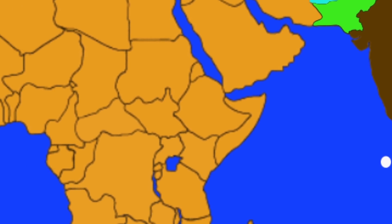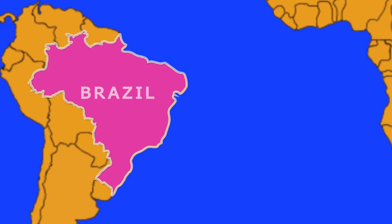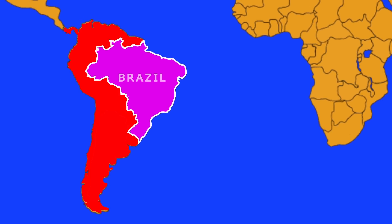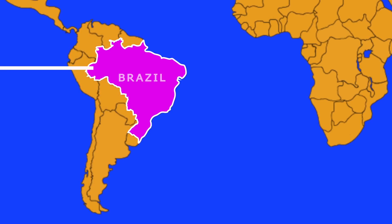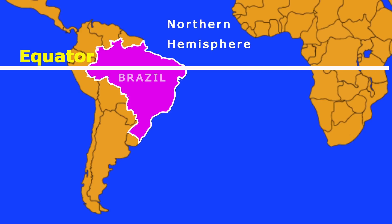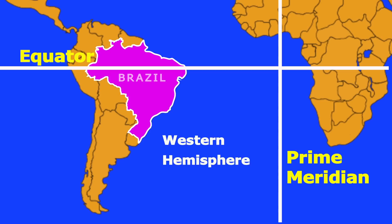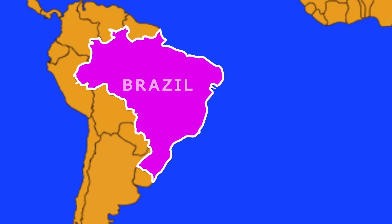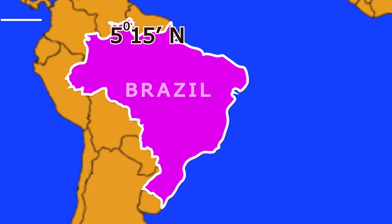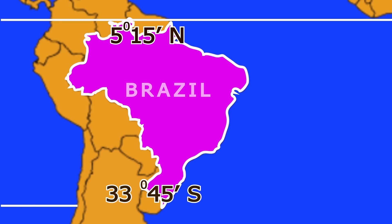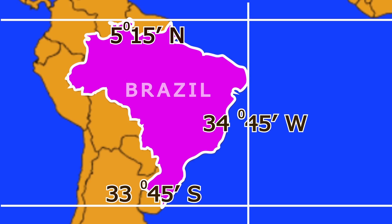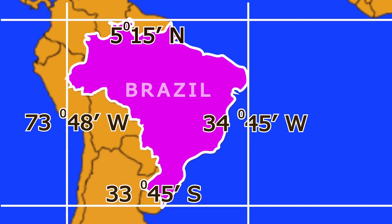Brazil lies in the South American continent. Since the equator passes through the northern part of Brazil, some part of Brazil lies in the northern hemisphere while most of it lies in the southern hemisphere. It also lies in the western hemisphere. Brazil lies between 5 degrees 15 minutes north and 33 degrees 45 minutes south latitudes, and between 34 degrees 45 minutes west and 73 degrees 48 minutes west longitudes.